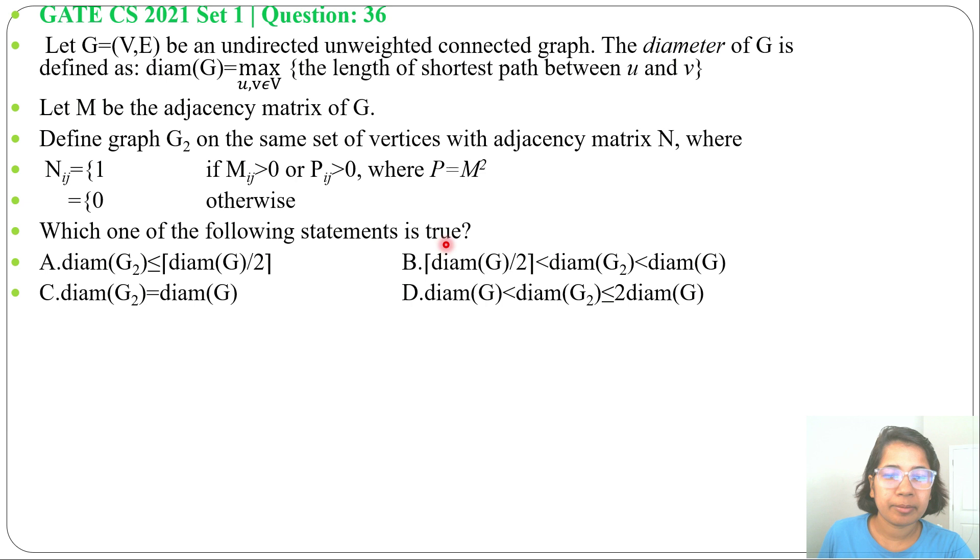Which one of the following statements is true? Four options are given. For solving this question, first we'll take an example, an undirected, no direction, unweighted, no weight, and connected graph. Let A, B, C are three vertices and there are two edges, A to B and B to C. There are no direction and no weight.